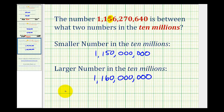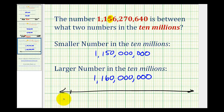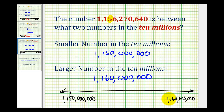Just to illustrate this one more time, if we had a number line scaled by 10,000,000, over here we'd have 1,150,000,000, and over here we'd have 1,160,000,000. The given number would be somewhere in the middle, a little bit closer to the larger number in the 10,000,000 — maybe somewhere in here.